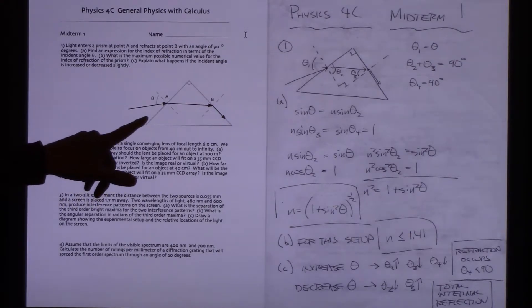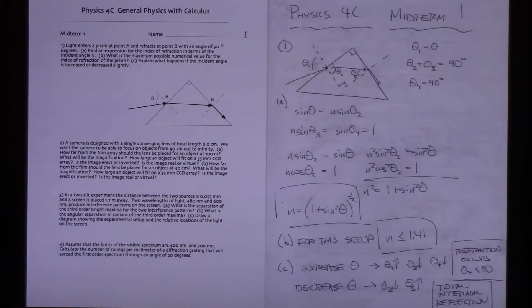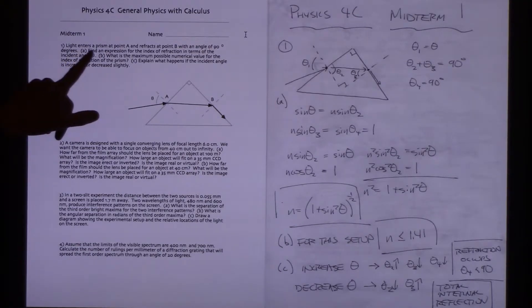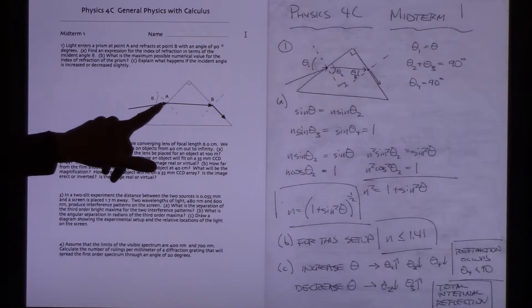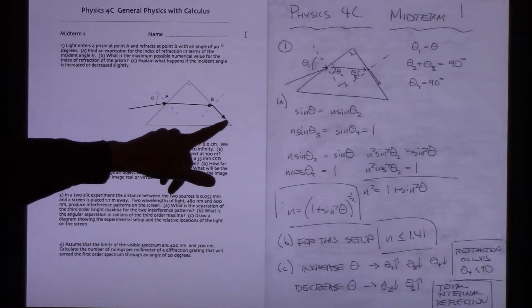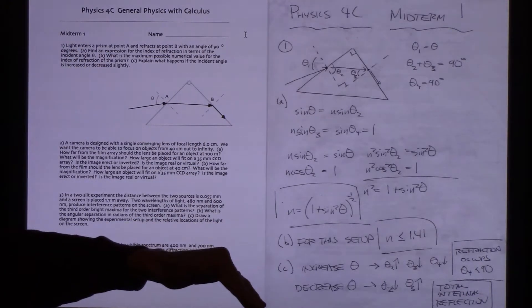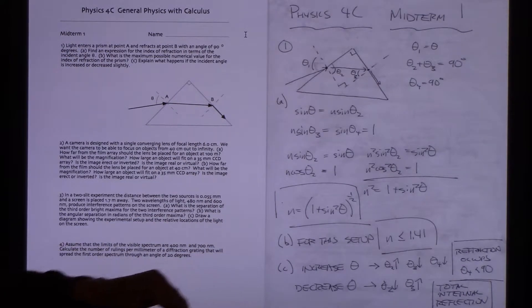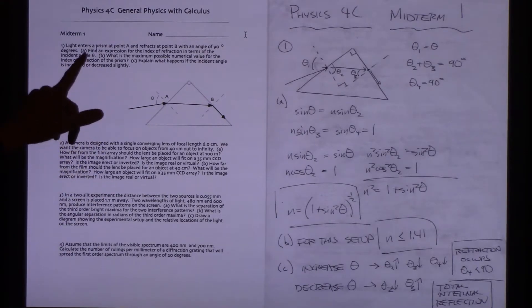This also has a refraction problem on it. Now I'm not going to guarantee there will be a refraction problem, but there's a pretty good chance something with refraction will be there. In any case, here we have light entering a prism at point A, it refracts at A, refracts at B, and then at B it turns and takes a 90 degree angle.